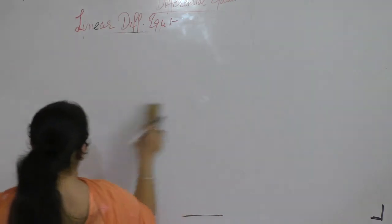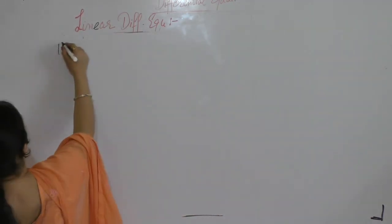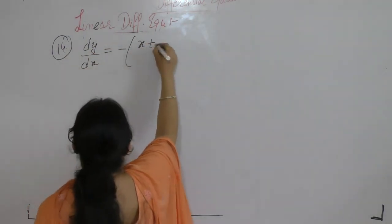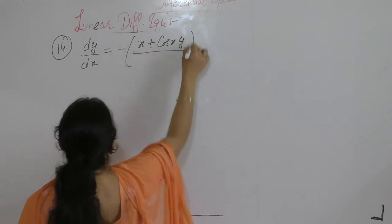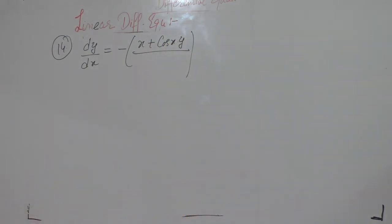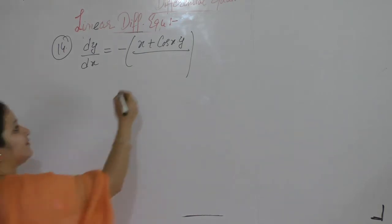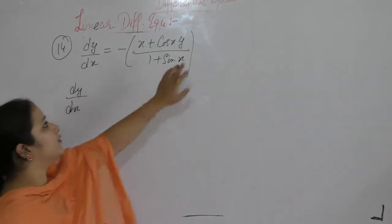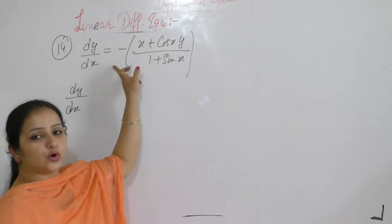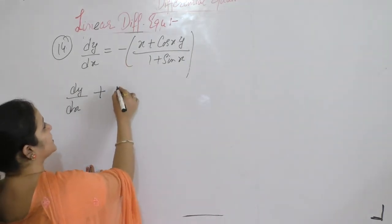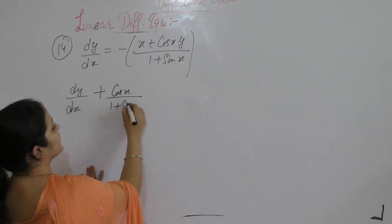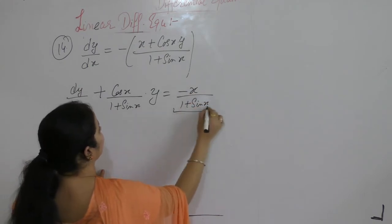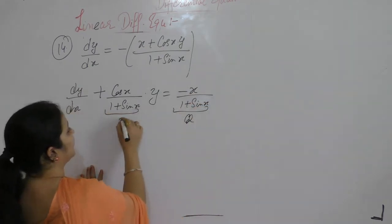Question number 14. Solve the differential equation dy/dx = −(x + cos(x) · y)/(1 + sin(x)). Separating terms: dy/dx plus cos(x)/(1 + sin(x)) · y = −x/(1 + sin(x)). This is q and the other term is p.